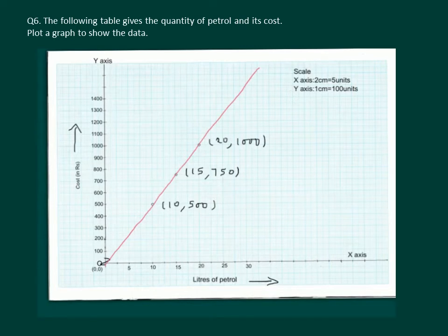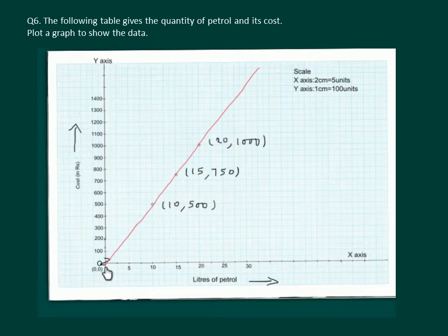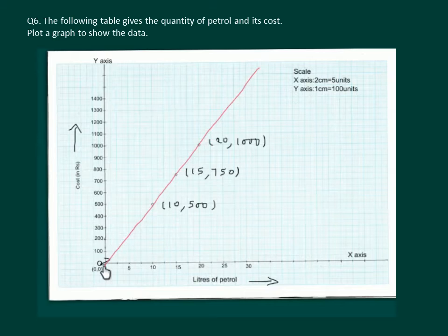On joining the points we get a line which passes through the origin. This symbolizes that if we are not buying any petrol we don't have to pay any amount — 0 litres of petrol will cost 0 rupees.